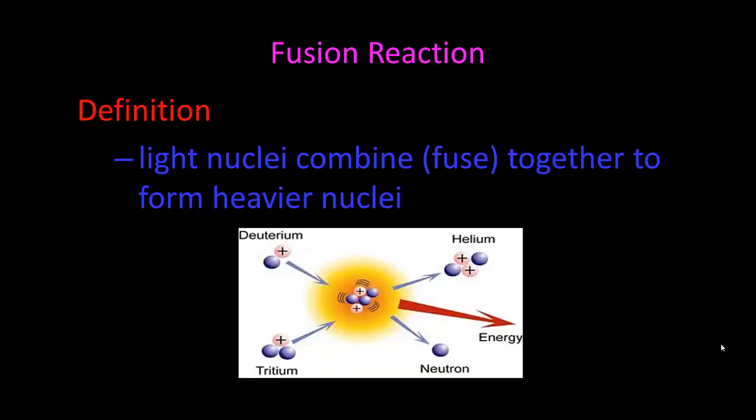Now let's talk about fusion. That is when light nuclei fuse together to form heavier nuclei, and if you look here, it's usually a deuterium, two hydrogen isotopes, deuterium and tritium. They form together. They bond. It requires a lot of heat in order to do that.